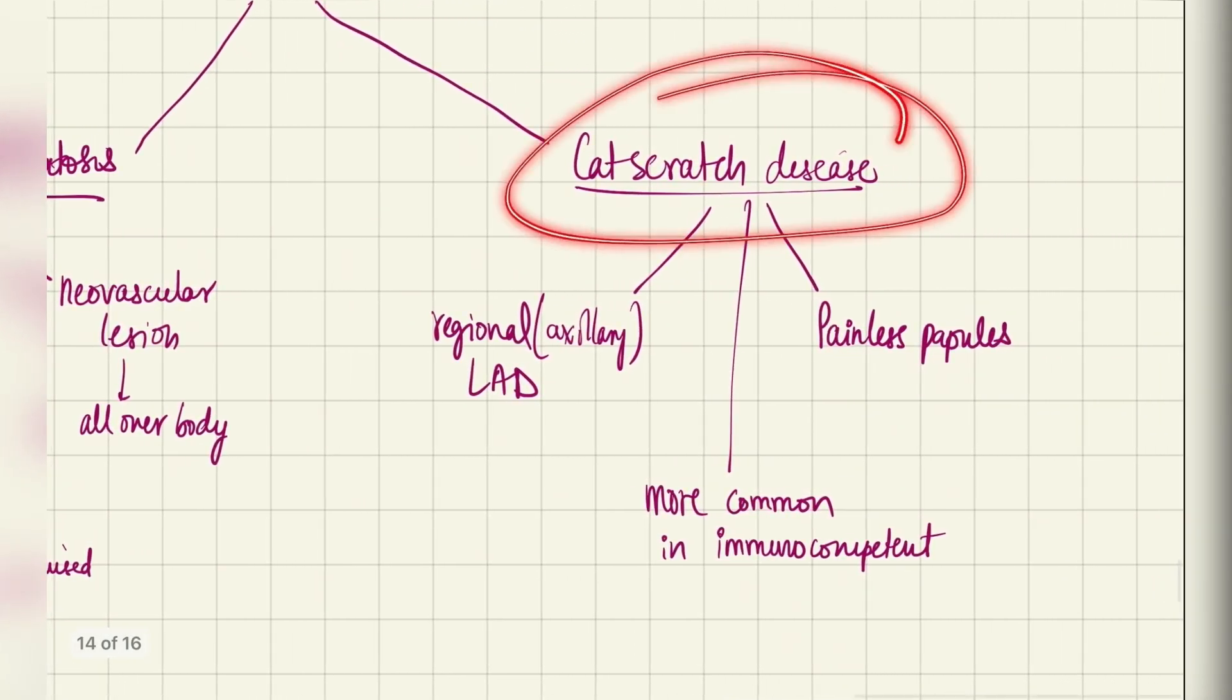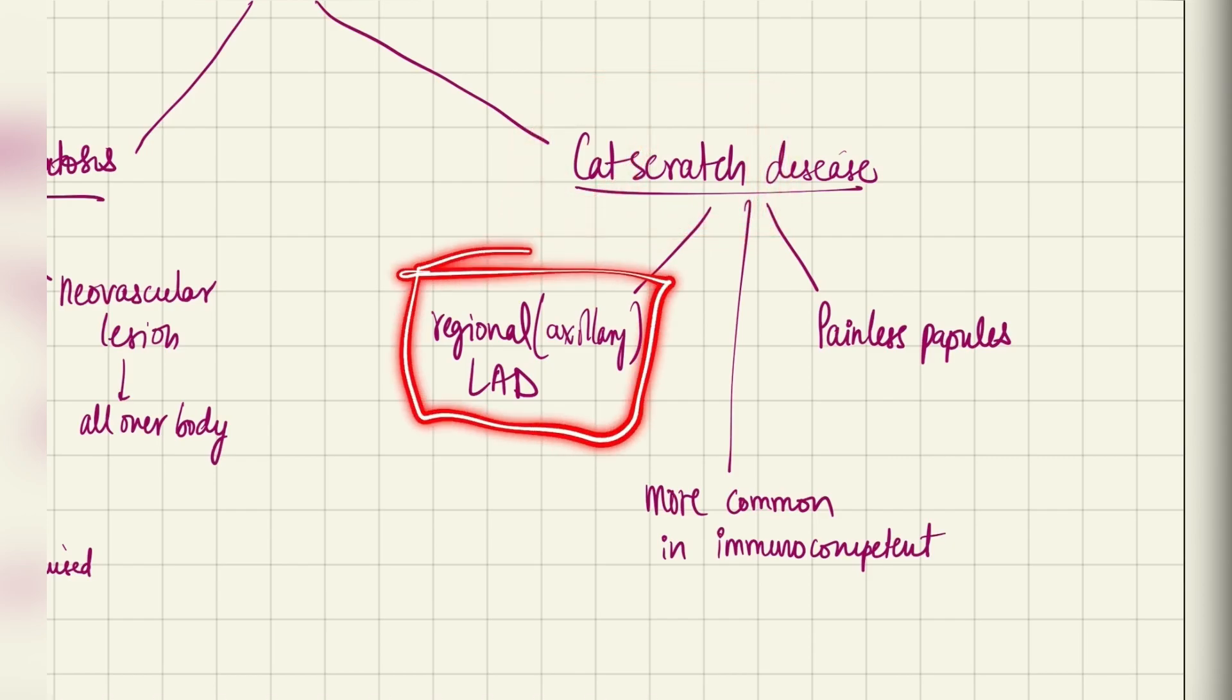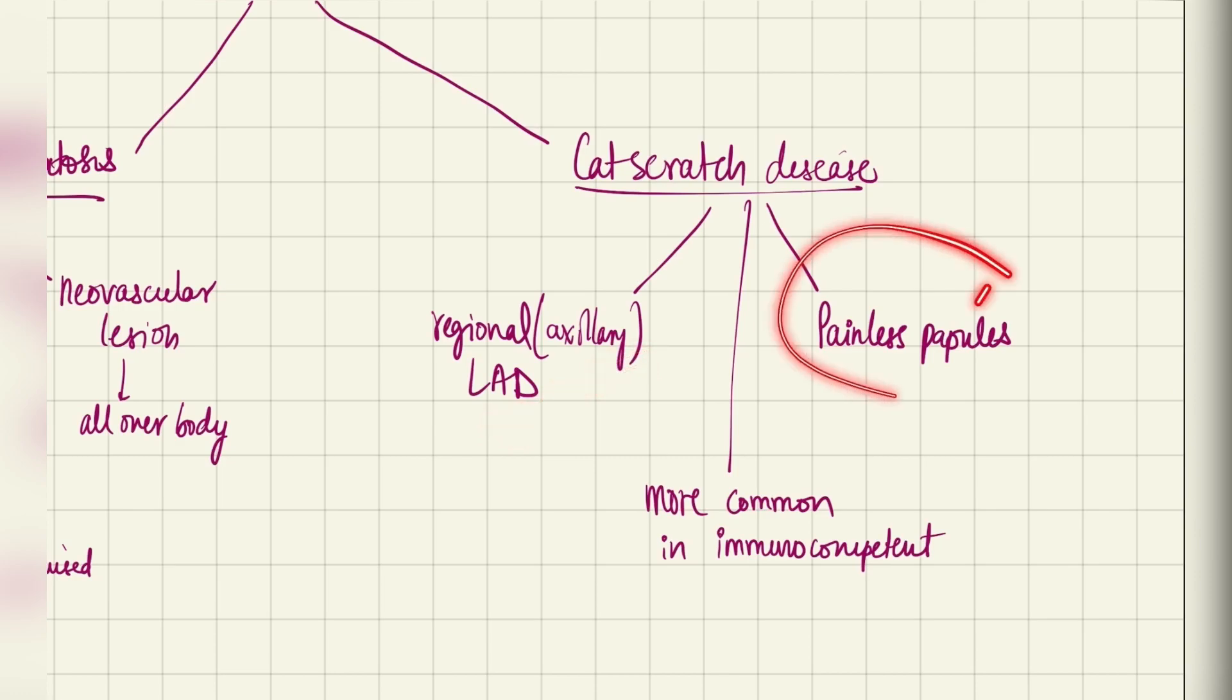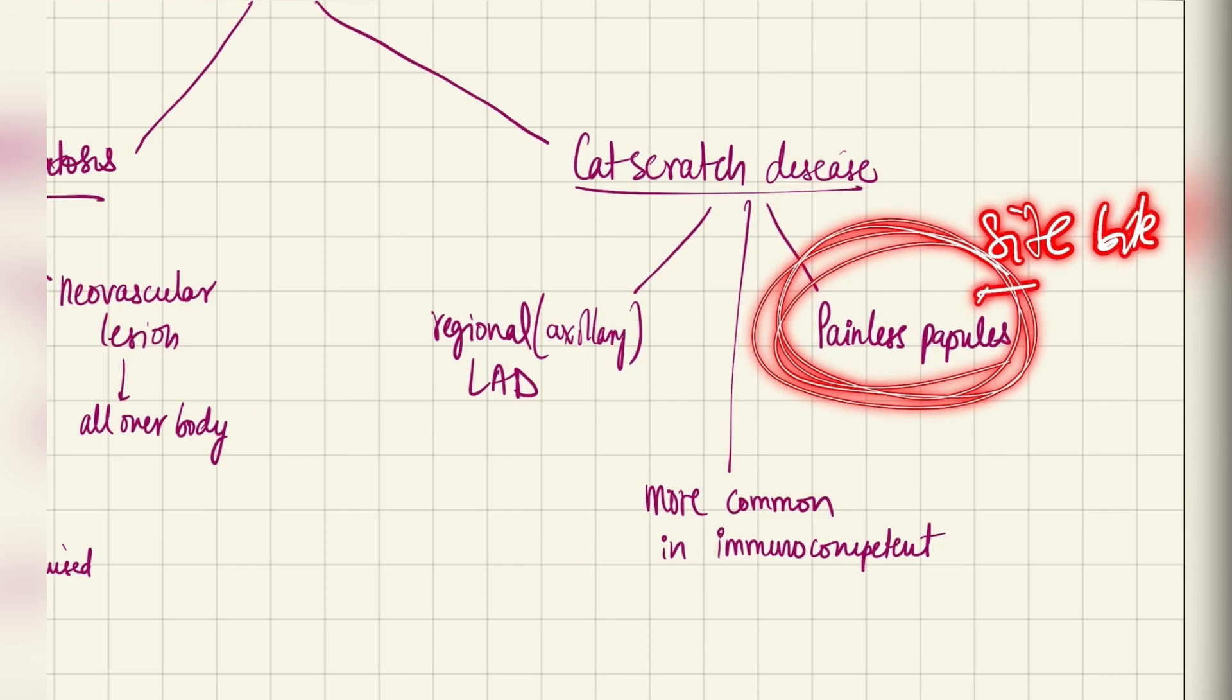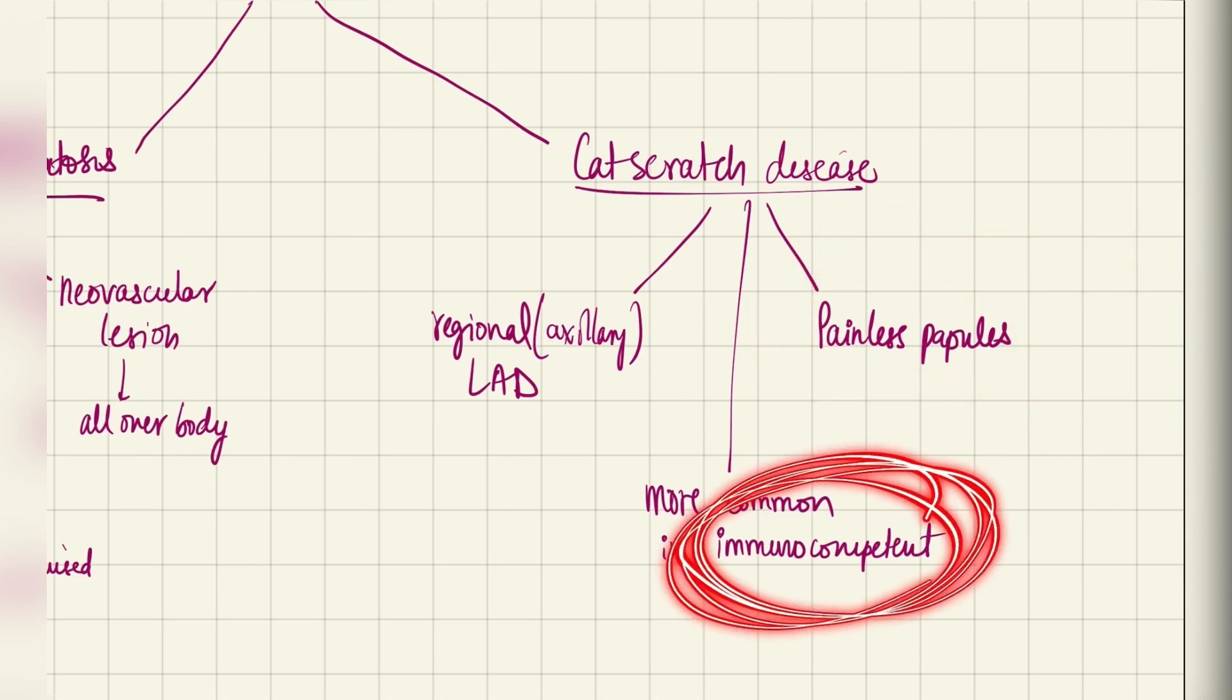Next, we have cat scratch disease. As the name suggests, it is caused because of a bite or a scratch of a cat. And here, we will see regional lymphadenopathy. Usually, in the axillary region, the lymph nodes will be enlarged. This is a very important point because we will also take specimens from here. There will be painless papules at the site of the bite. We will see painless papules. And this is seen in immunocompetent people.